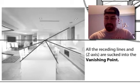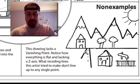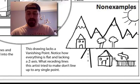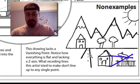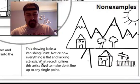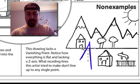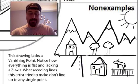Let's look at some non-examples. If you look, this drawing here, it lacks a vanishing point. Here the artist tried to draw the side of a house, but it doesn't line up. Also, any attempts for receding lines, they don't really line up to a vanishing point either. Everything is just kind of hodgepodge sitting around there.